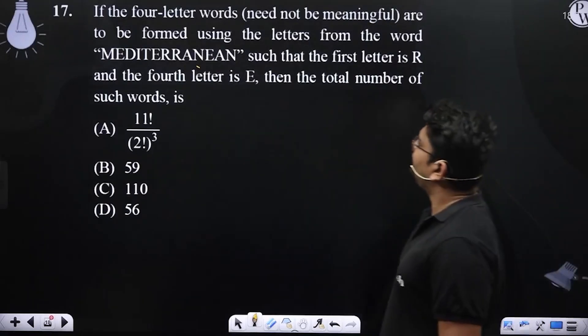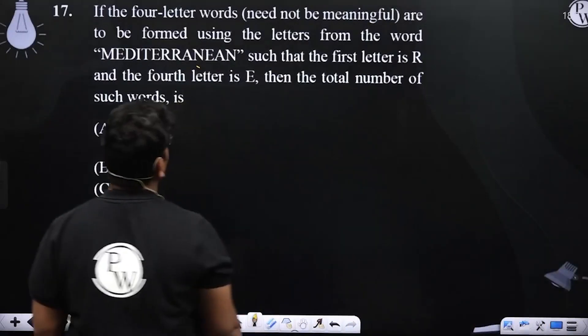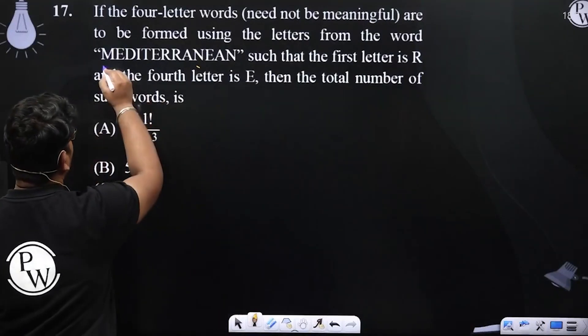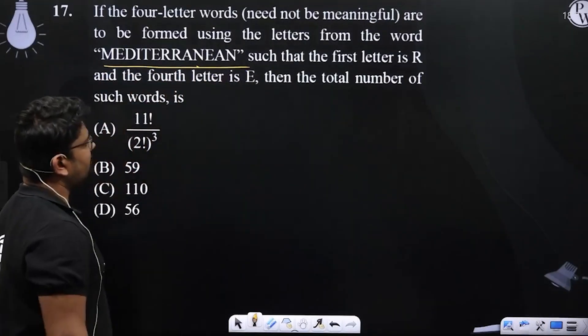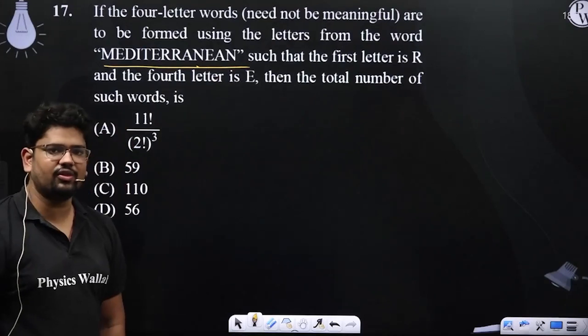In this question we are asked if four letter words are to be formed using the word such that the first letter is R and the fourth letter is E.